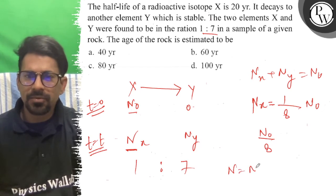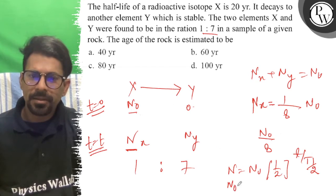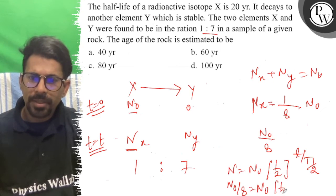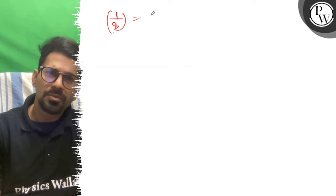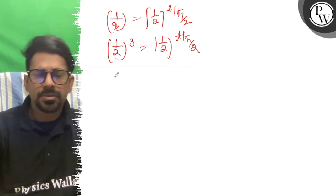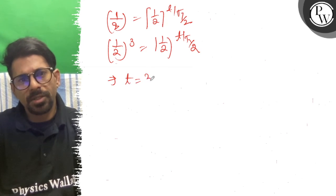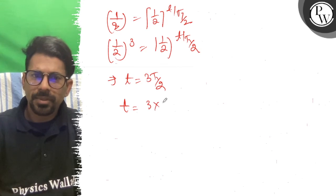The equation is N equals N0 times (1/2) to the power of t by t-half. So N0 by 8 equals N0 times (1/2)^(t/t-half). This gives (1/2)^3 equals (1/2)^(t/t-half), so t equals 3 times t-half. That is 3 into 20 equals 60 years.